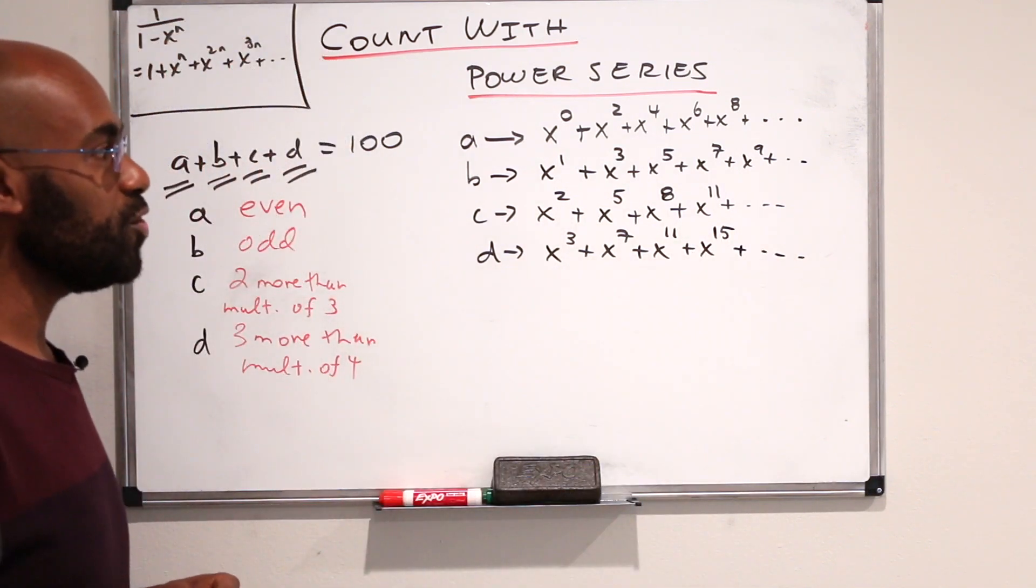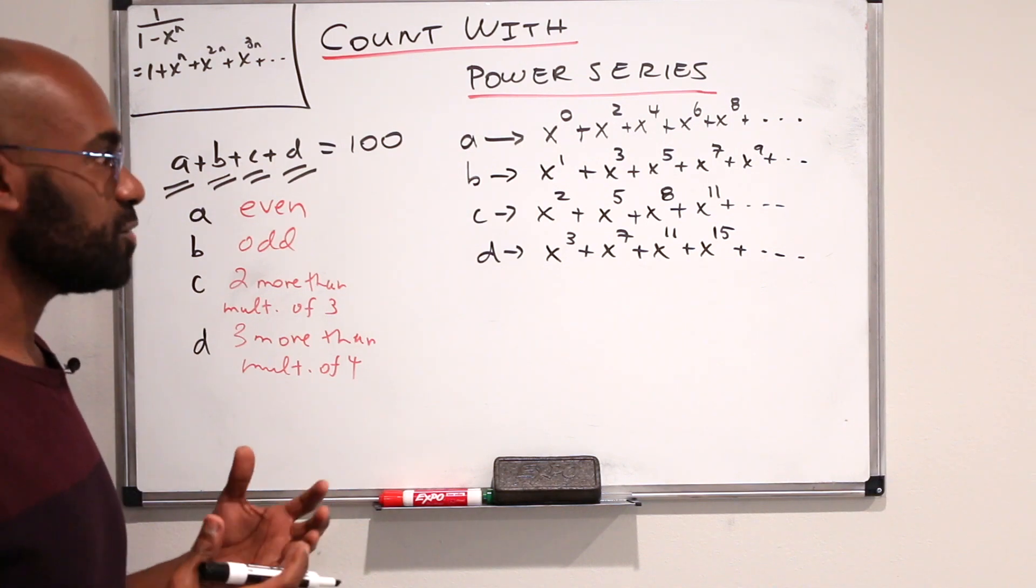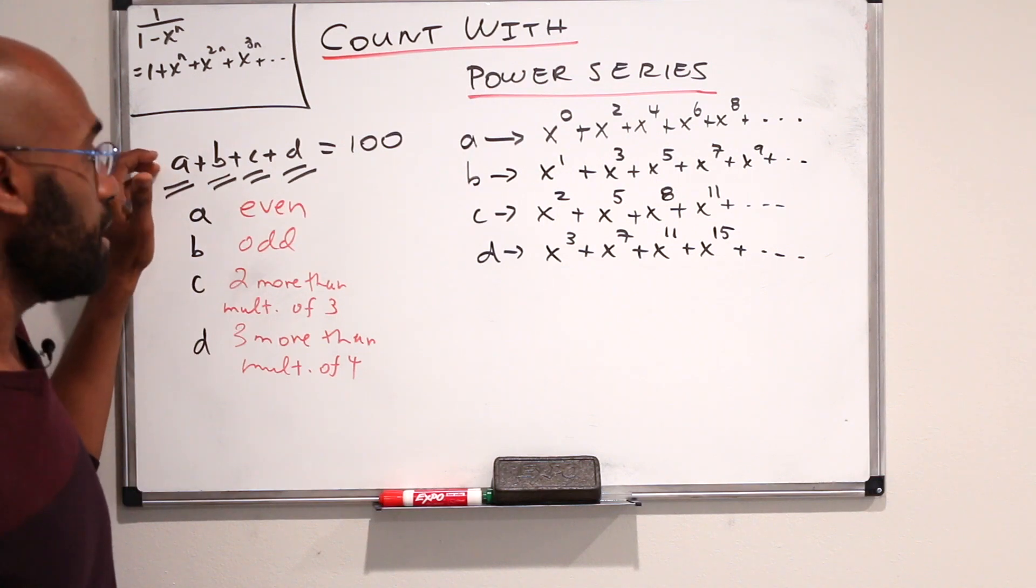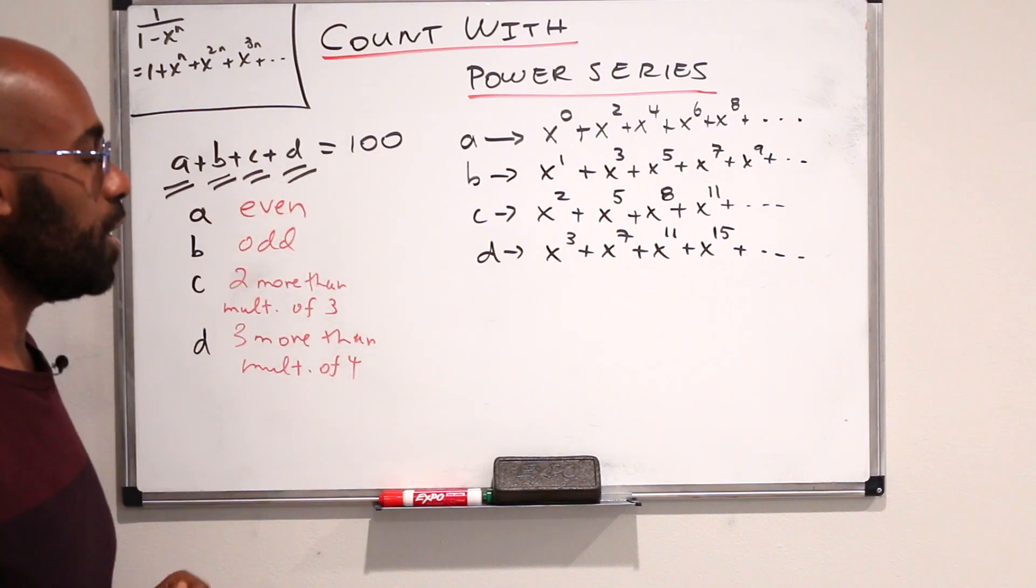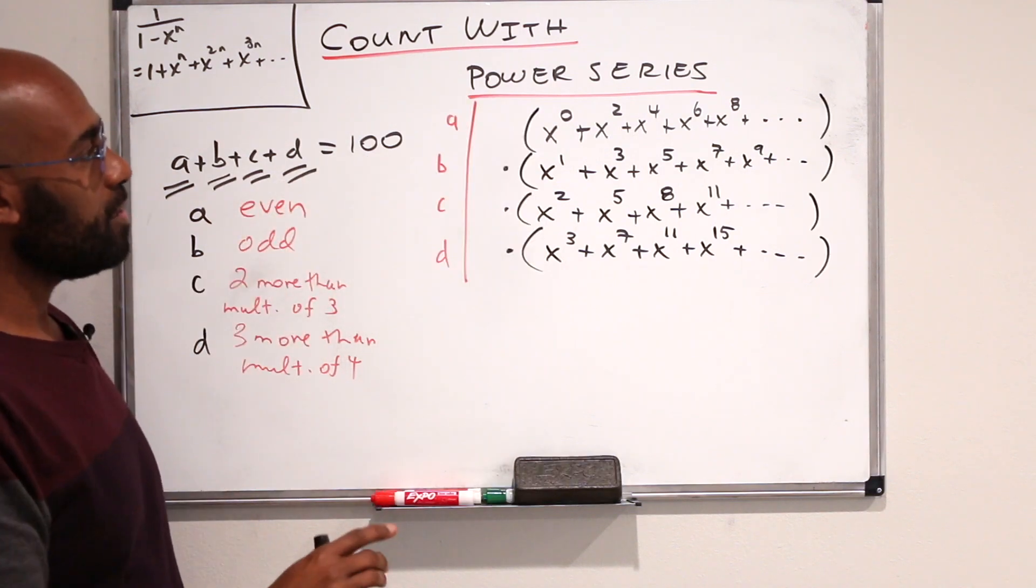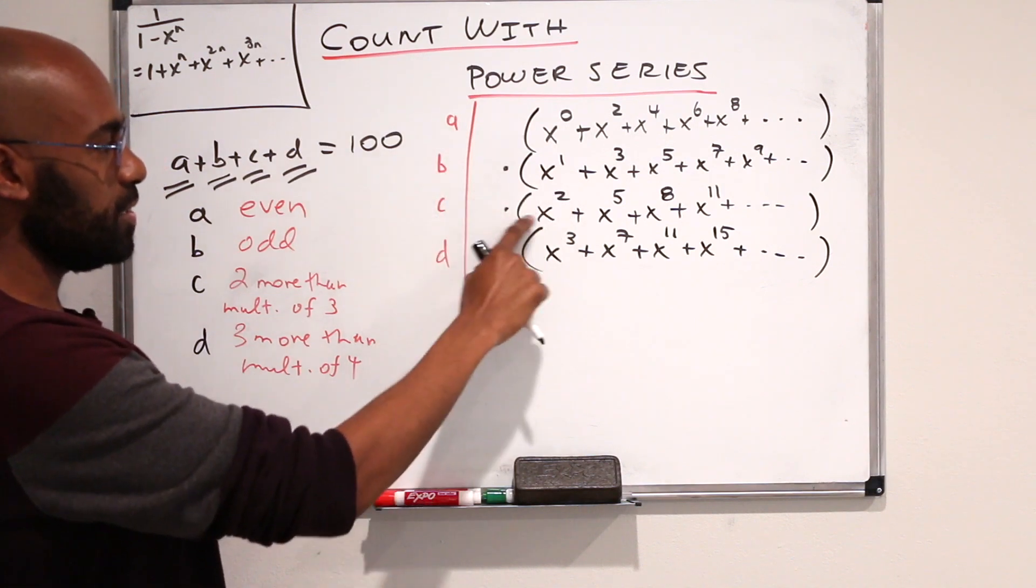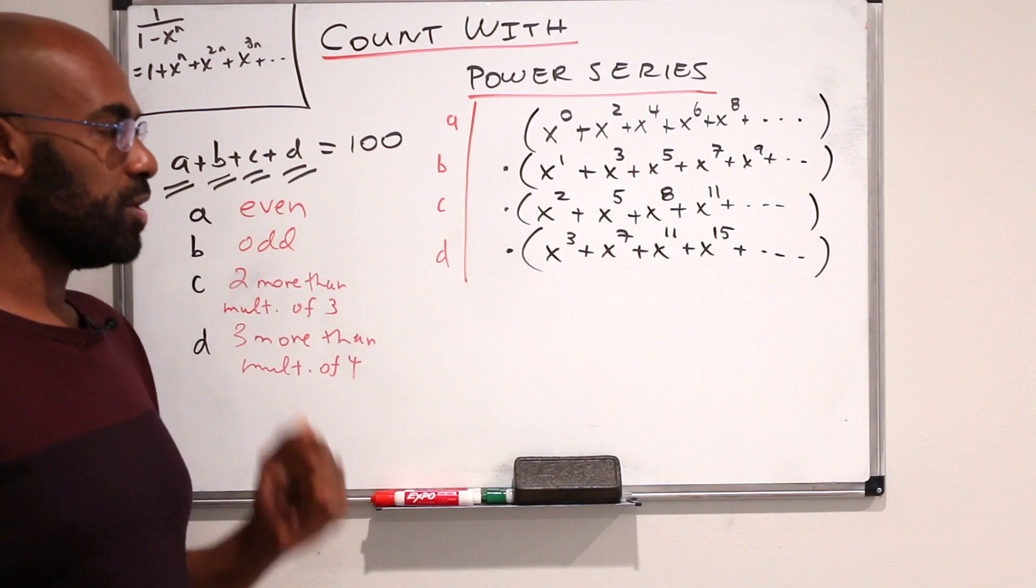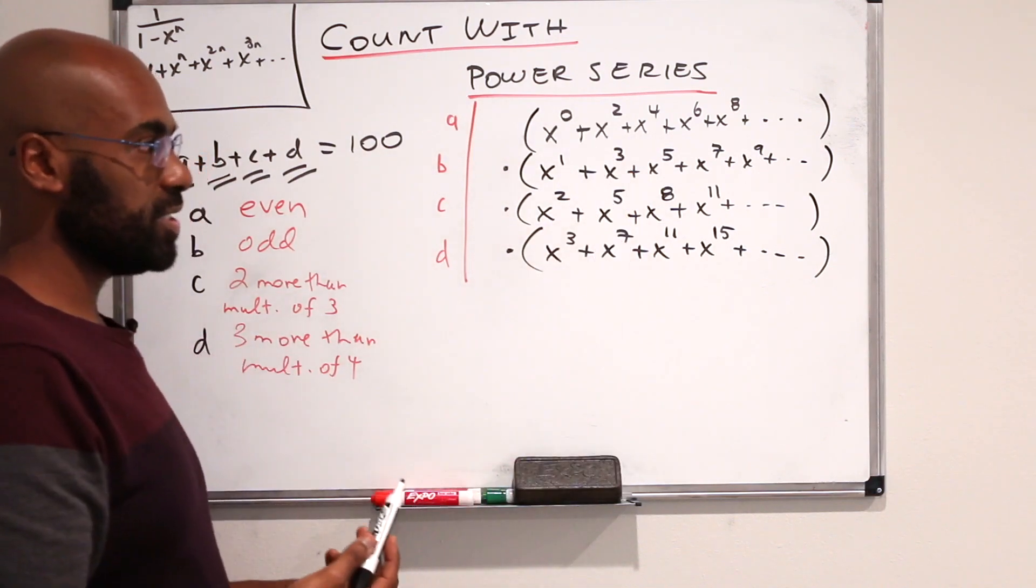Now we're going to see how to use these four power series to get some type of expression that'll allow us to determine the number of non-negative integer quadruples that sum to 100. This is the series associated with A, B, C, and D, again keeping track of the possibilities of A, B, C, D in the exponents. Now the key is to actually multiply all of these power series together.